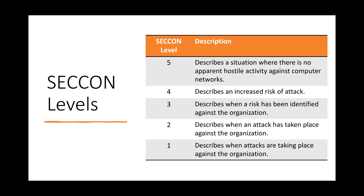There are five SECCON levels we recommend. Level five is where everything is normal. Level four means there is some type of risk — maybe you've received threat intelligence about a known widespread risk. Level three is a specific risk against your organization, industry, or region — for example, a cybersecurity attack targeting New York State or medical devices specifically. Level two means the attack has already occurred and you're at a heightened security level. Level one is where you're under active attack with many moving parts.